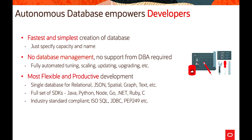Now that dependency is gone, which improves productivity. There is no database management and no support from a DBA required — tuning, scaling, updating, and upgrading are all fully managed by Oracle. It's the most flexible and productive kind of development: a single database supports relational, JSON objects, spatial, graphs, text, and more. A full set of SDKs is supported — Java, Python, Go, .NET — and it is ISO SQL and JDBC industry-standard compliant.